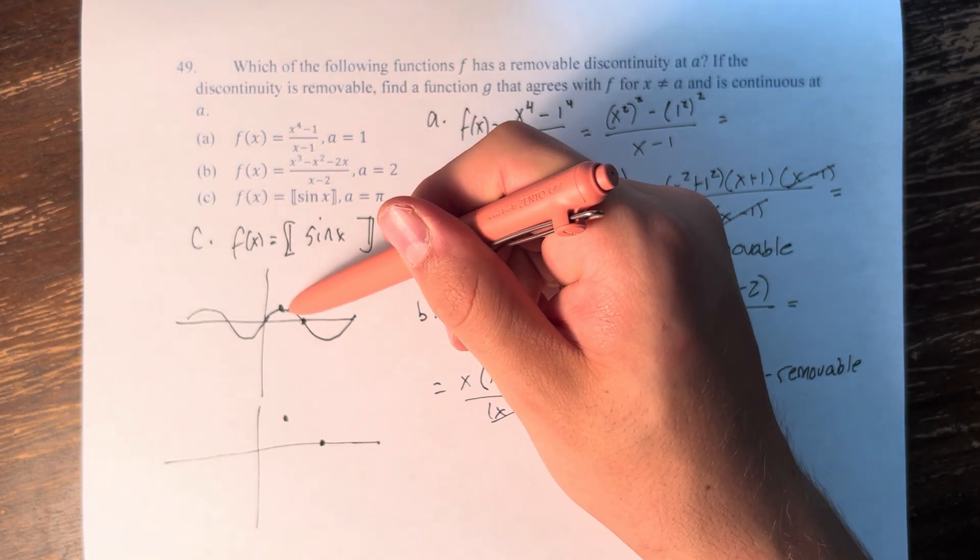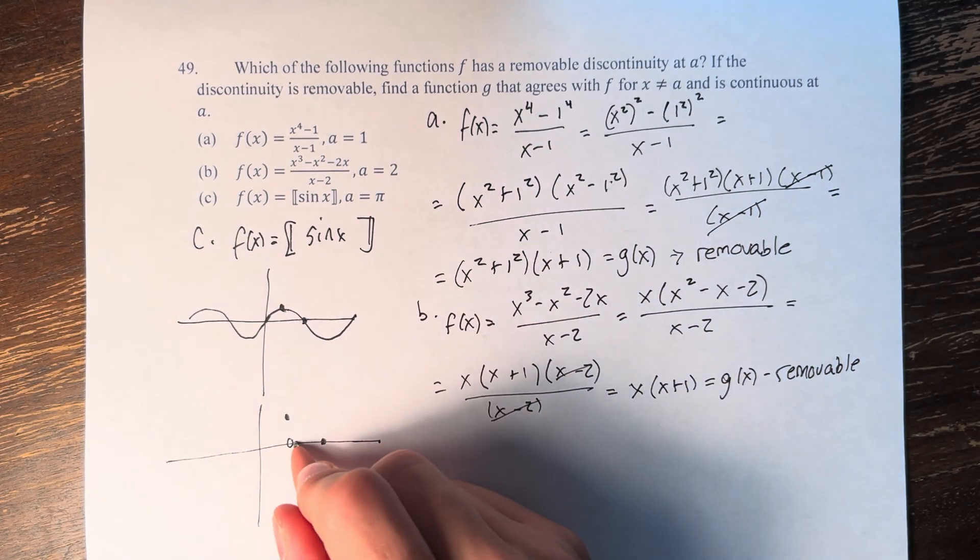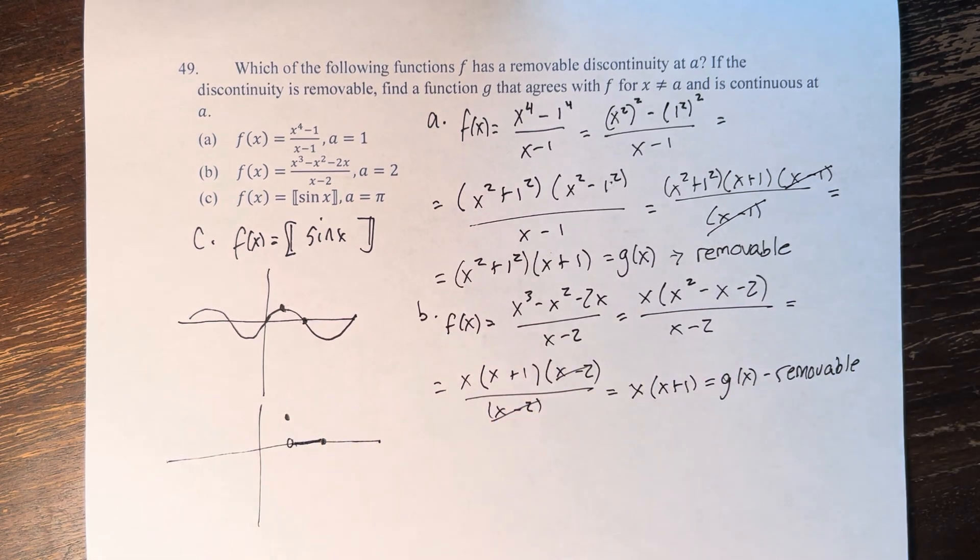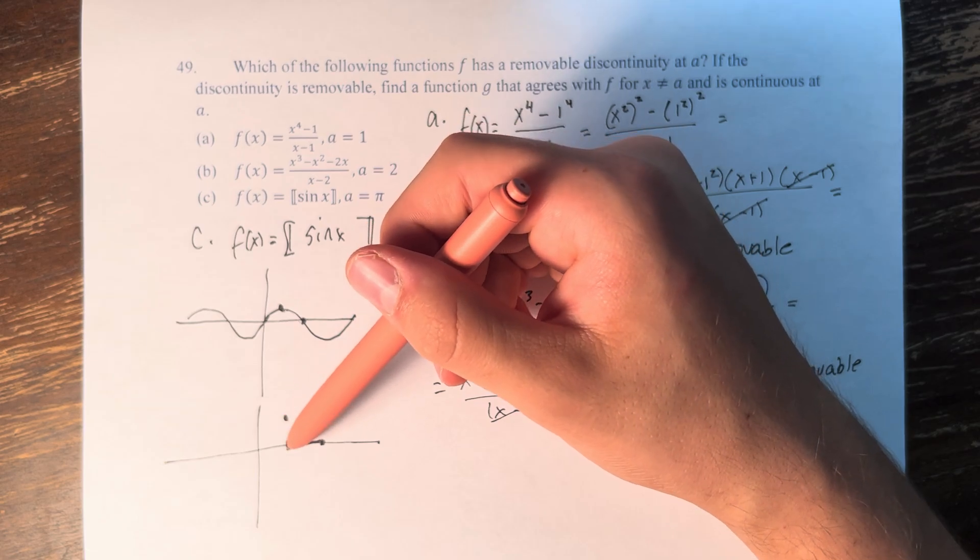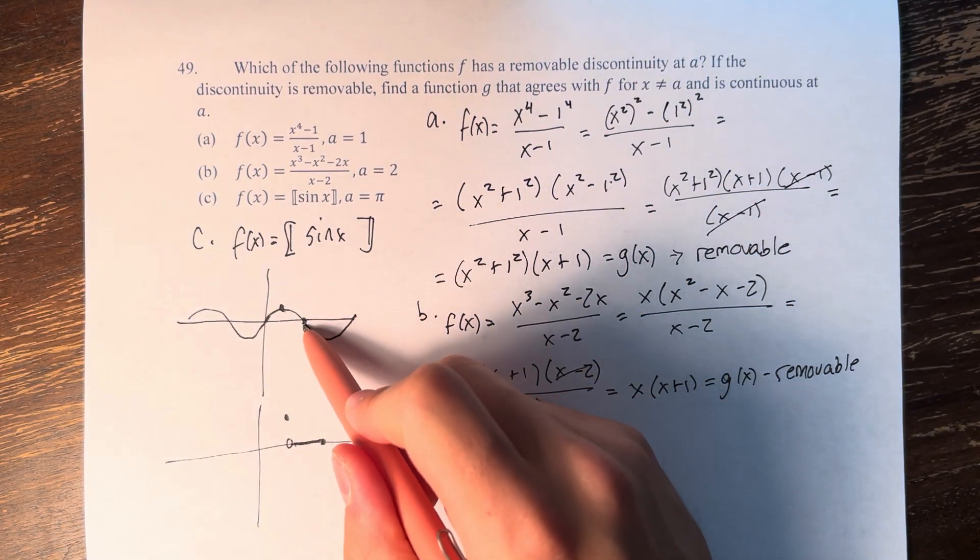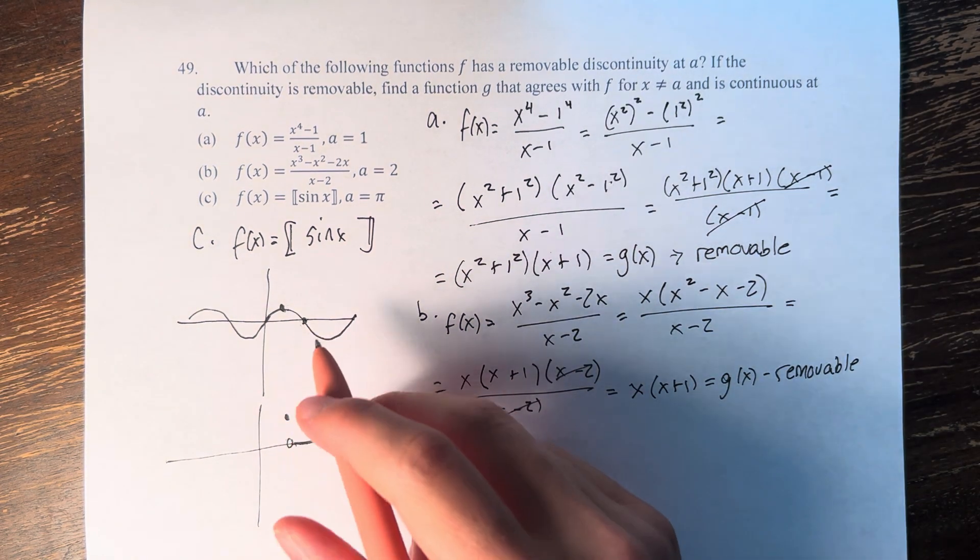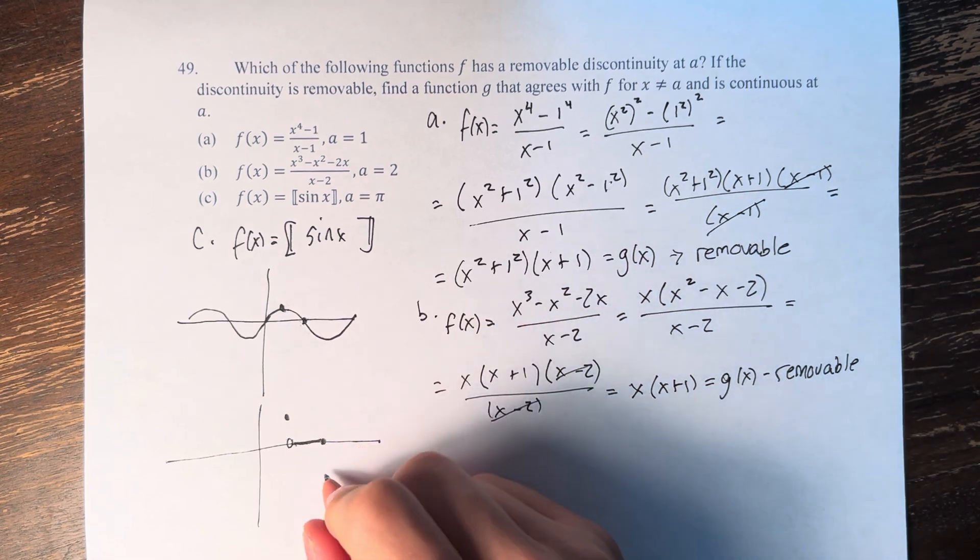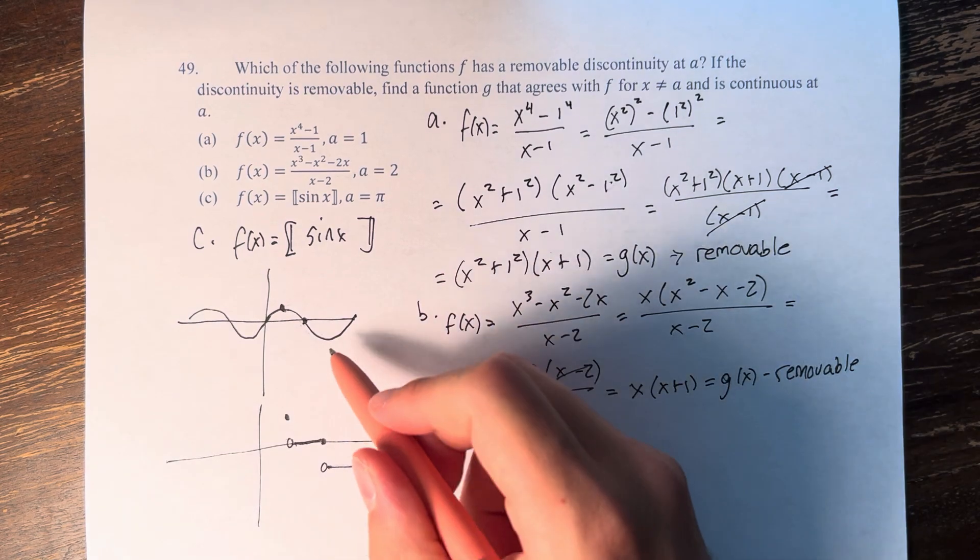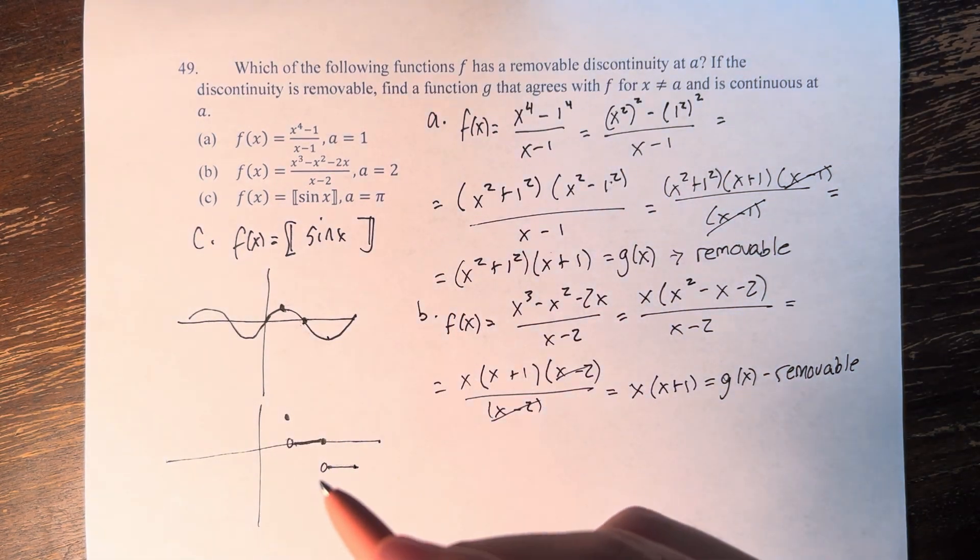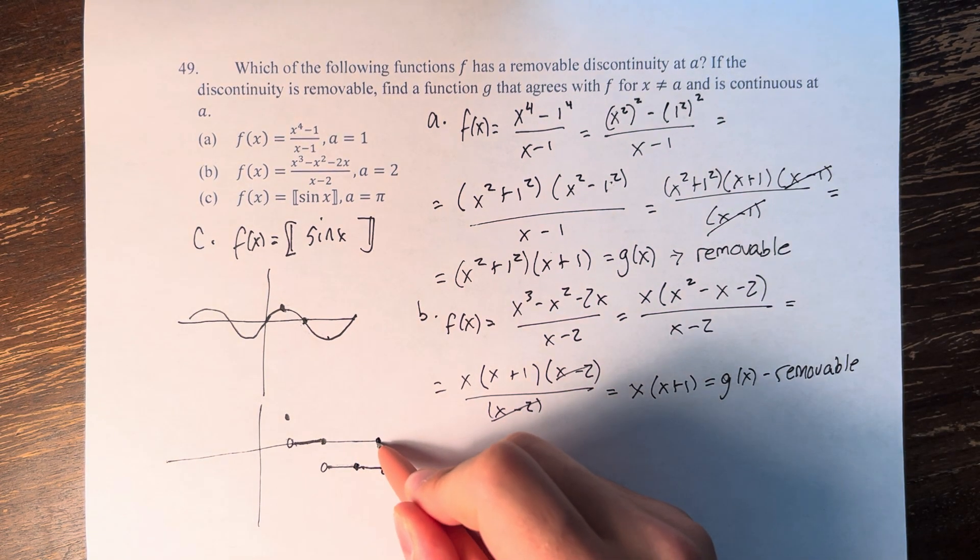So the function goes from 0 from this point, pi over 2 to this point, pi. Then for this entire point, the greatest integer less than or equal to it is negative 1. At negative 1, the value is negative 1. And then we continue here until we hit 0, and we're back up here again.